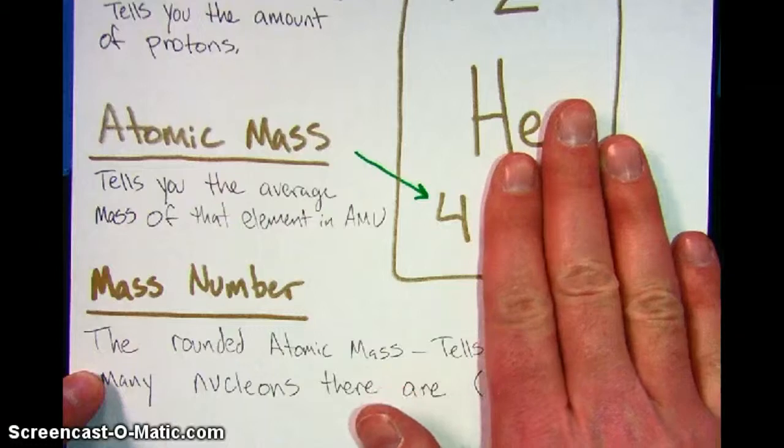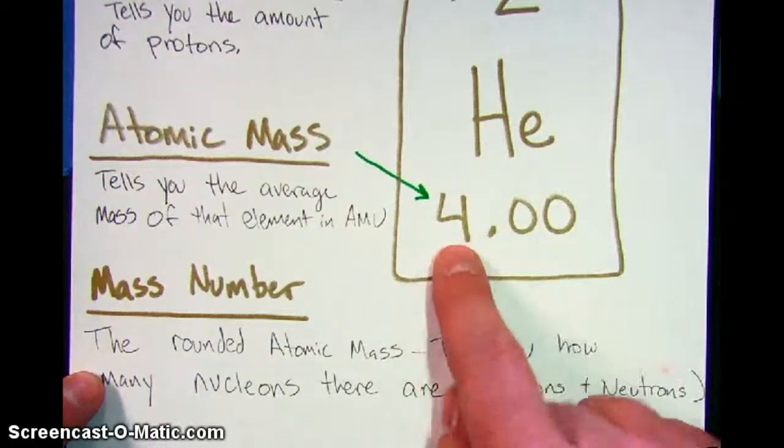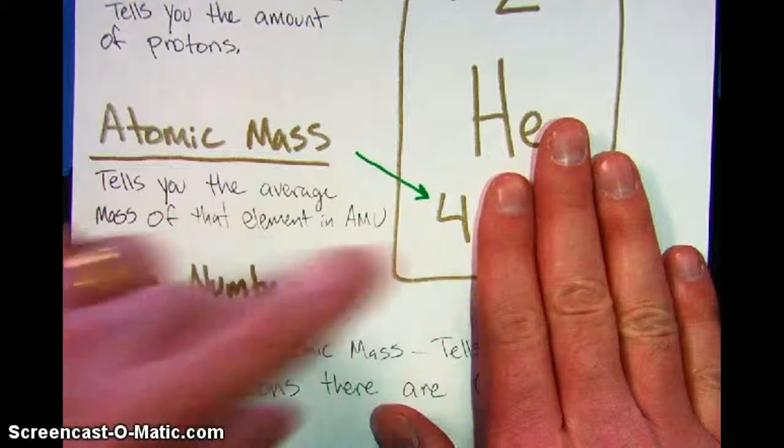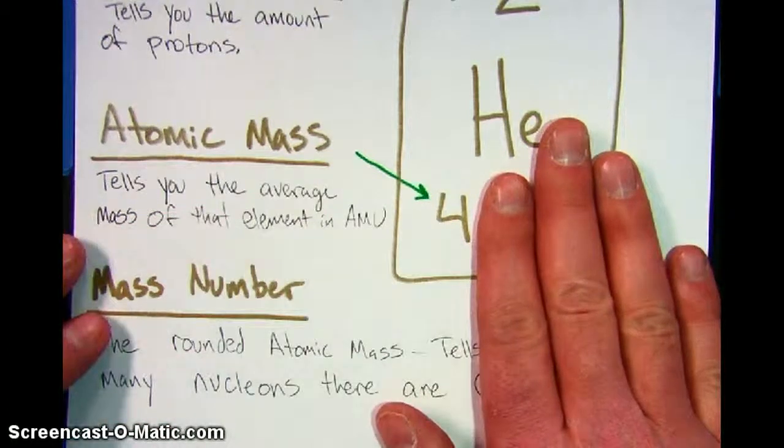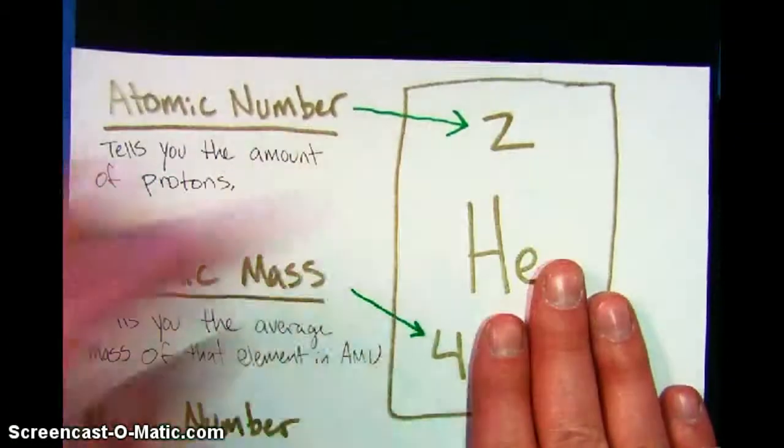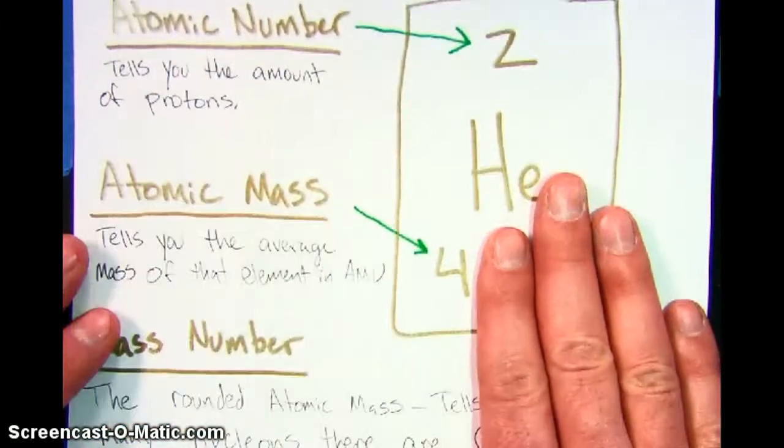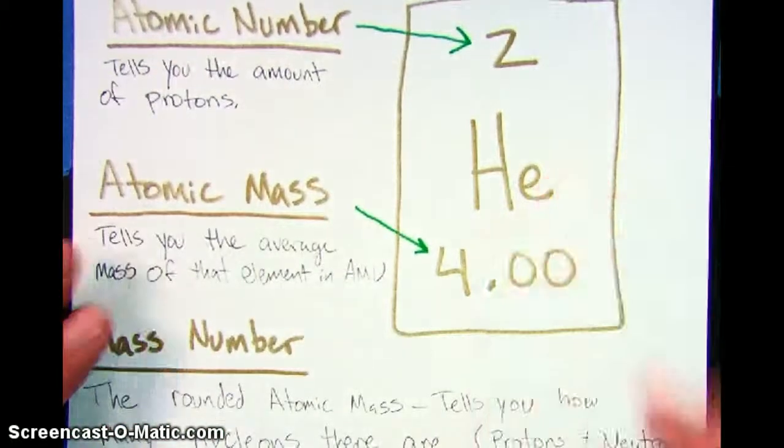Now, here's what that 4 represents. On average, when you round this, that means that there are 4 things in the nucleus. Since we already know that two of those things are protons, the other two have to be neutrons.